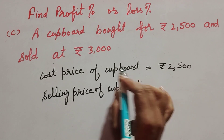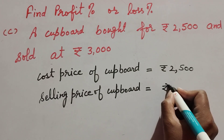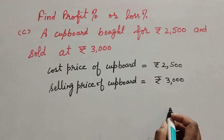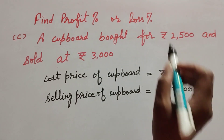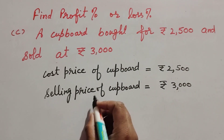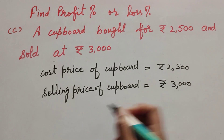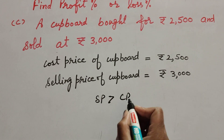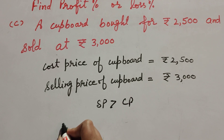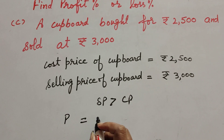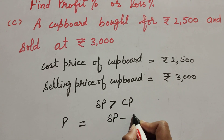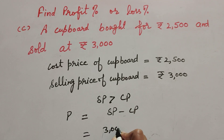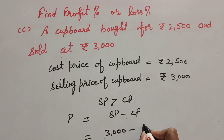We find profit percent or loss percent. The selling price equals 3000 and cost price equals 2500, so selling price is greater than cost price. When selling price is greater than cost price, we get profit. Profit is equal to SP minus CP, that is 3000 minus 2500.